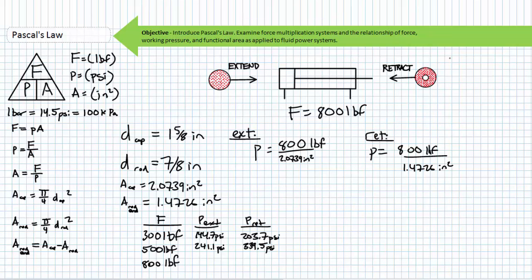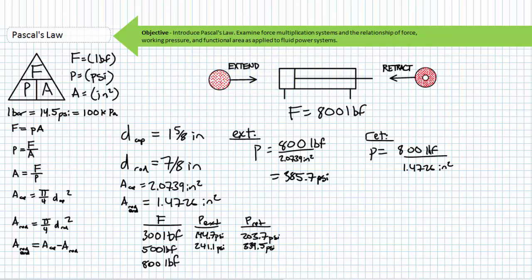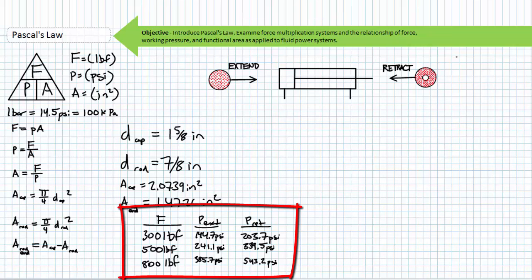Working pressure should go up for a larger load — let's prove it. What is the working pressure necessary for this cylinder to extend and retract with 800 pounds of force? Pause and take a shot at this. Pascal's Law demonstrates extending with 800 pounds using the larger cap end necessitates approximately 385.7 PSI, while retracting with 800 pounds using the smaller rod end necessitates approximately 543.2 PSI. For all scenarios, note the difference between extension and retraction pressures due to the area imbalance. As load progressively increases from 300 to 500 to 800 pounds, working pressure progressively increases regardless of whether the cylinder is extending or retracting.